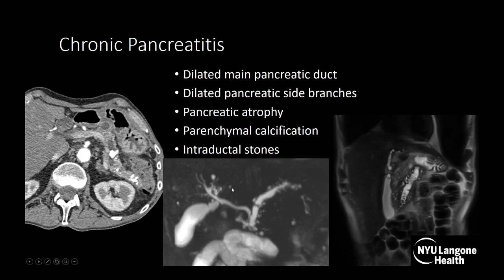Here's another case on coronal MRCP — a heavily T2-weighted sequence. You can see a dilated main pancreatic duct with dilated side branches. There's a crisscross configuration here: the main pancreatic duct going to the minor papilla, and the common bile duct draining to the ampulla. This is an example of pancreas divisum, which is one of the causes of chronic pancreatitis.